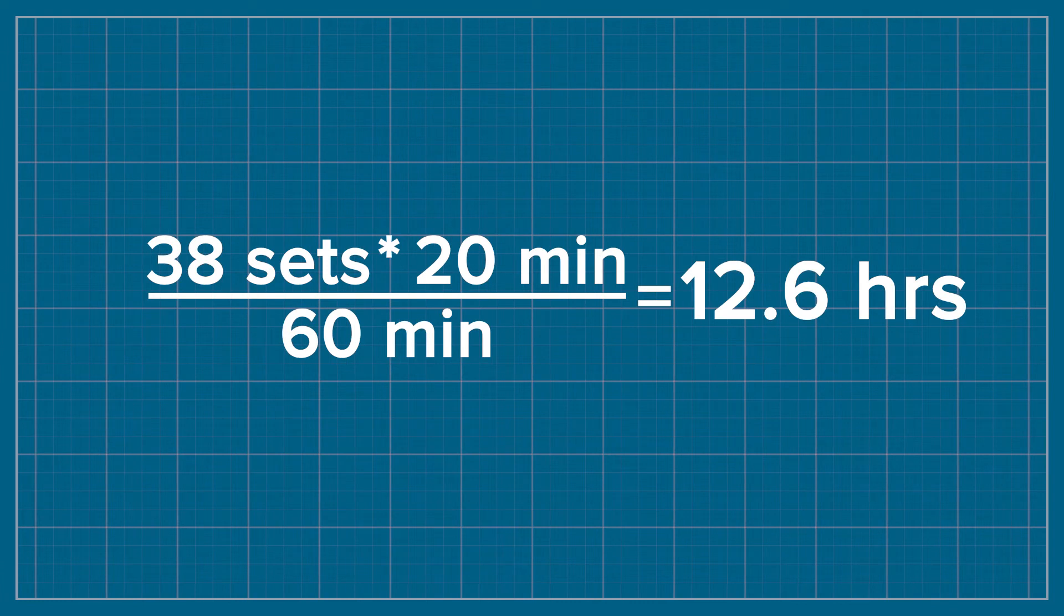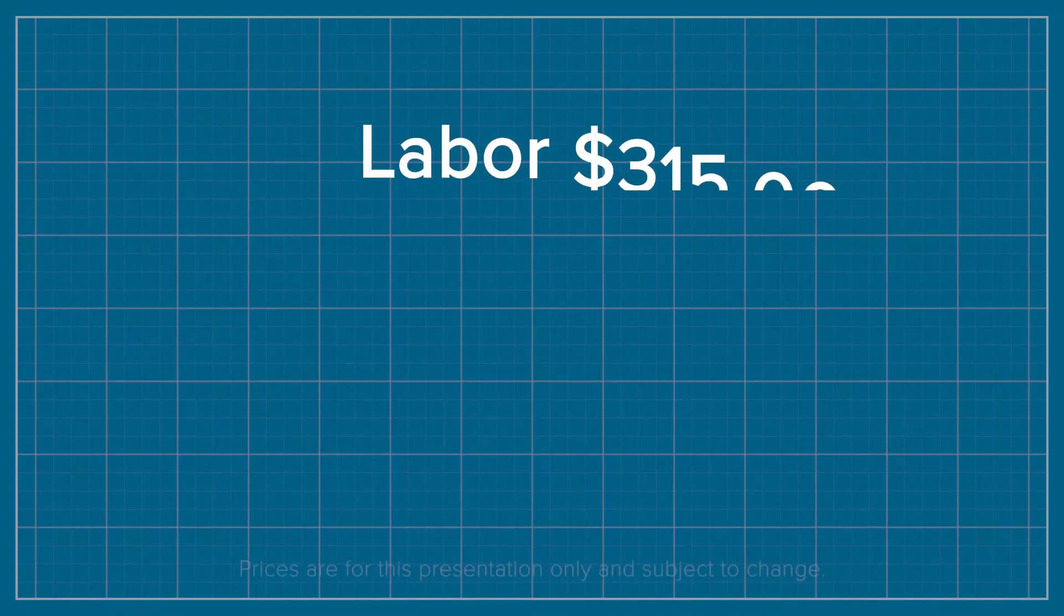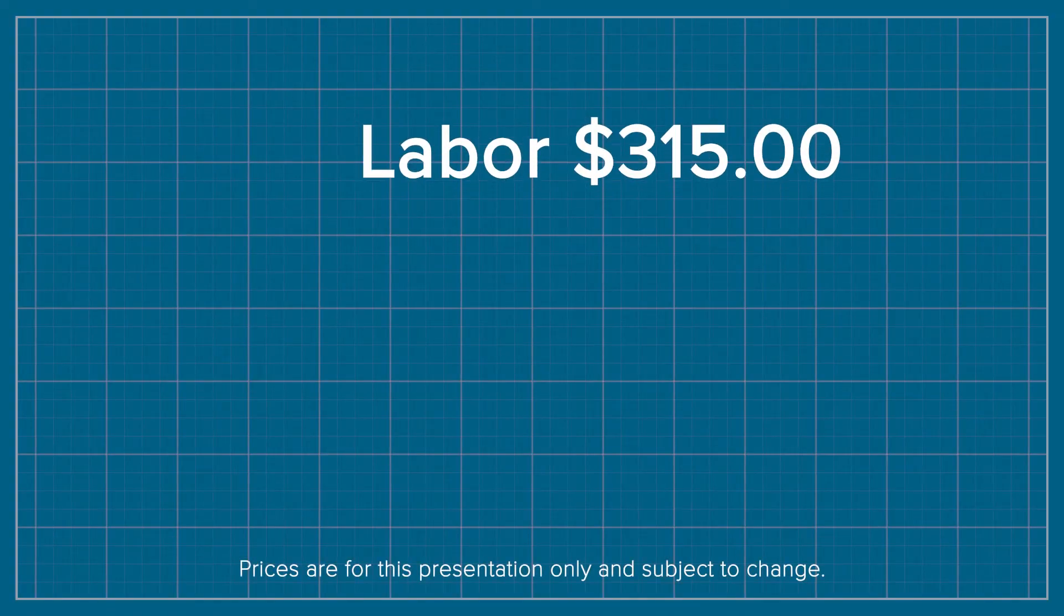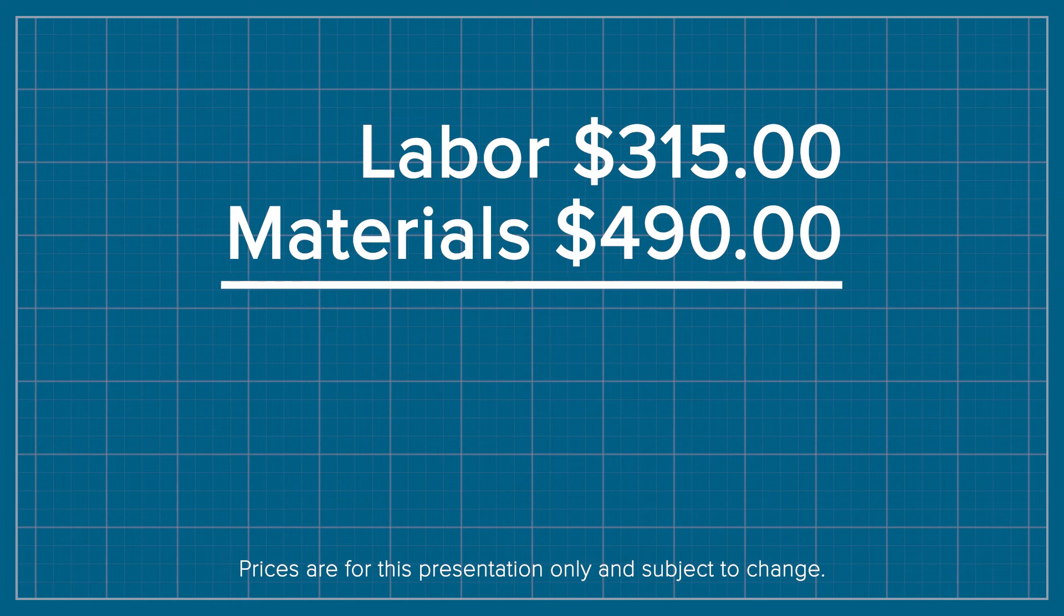If you use a $25 an hour standard for labor, the total cost to install these lights is going to be $315. Total tree for materials and labor is going to be $805.